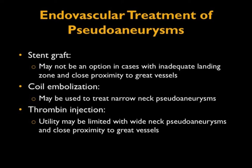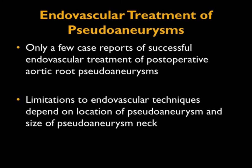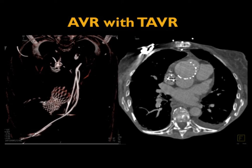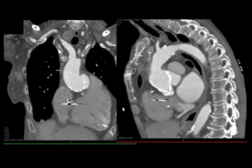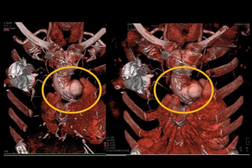Thrombin injection may be limited with wide-neck pseudoaneurysms or close proximity to great vessels. There are only a few cases of successful endovascular treatment of post-op root pseudoaneurysms, and limitations depend on location and neck size. Here's an example of a patient with an aortic valve replacement done by TAVR — percutaneous technique — where on non-contrast you can see it, and with contrast material you see the pseudoaneurysm in the root very nicely, including on the sagittal perspective and with volume rendering.